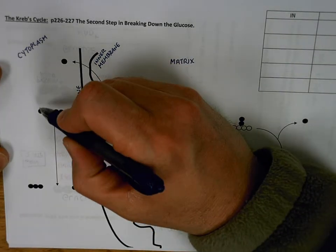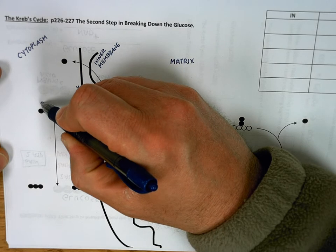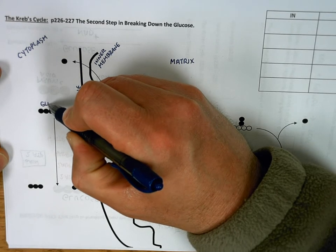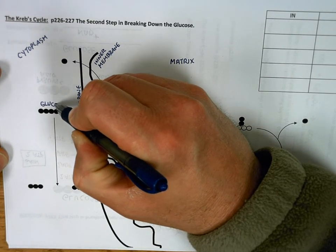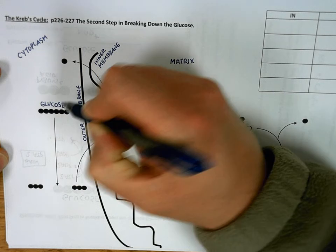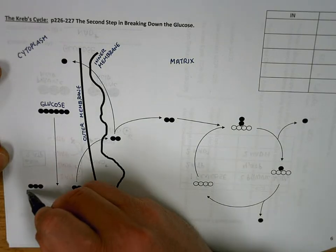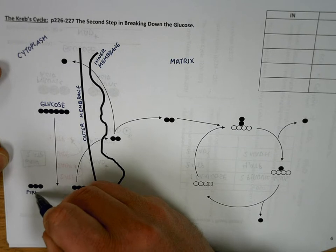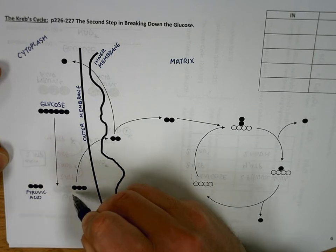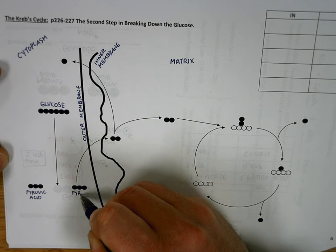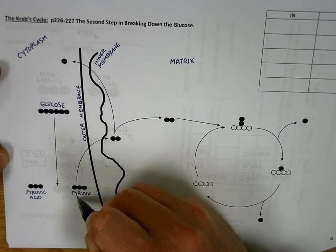So this looks familiar over here. The process of glycolysis, splitting the glucose into two pyruvic acids, doesn't happen in the mitochondria. It happens out here in the cytoplasm. So just for review, we'll say glucose, pyruvic acid, pyruvic acid.